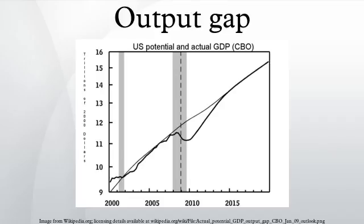The United States labor market's slack is evident in an October 2013 unemployment rate of 7.3%, compared with an average annual rate of 4.6% in 2007, before the brunt of the recession struck. Second, the longer a sizable output gap persists, the more damage will be inflicted on an economy's long-term potential through what economists term a hysteresis effect — in essence, workers and capital remaining idle for long stretches due to an economy operating below its capacity can cause long-lasting damage to workers and the broader economy.